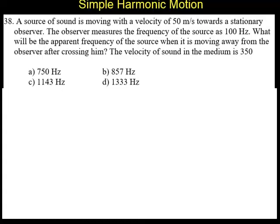Question number 38. A source of sound is moving at the velocity of 50 meters per second towards a stationary observer. The observer measures the frequency of the source as 1000 Hz. What will be the apparent frequency of the source when it is moving away from the observer after crossing him? The velocity of sound in the medium is 350 meters per second. The alternatives are 750 Hz, 857 Hz, 1143 Hz, and 1333 Hz.